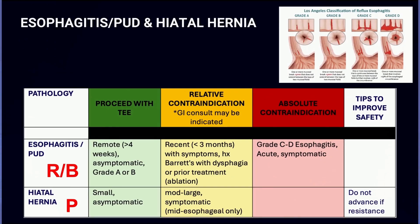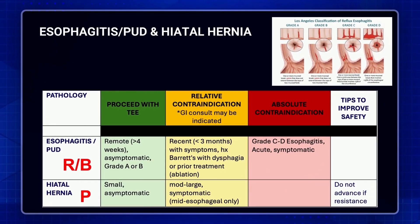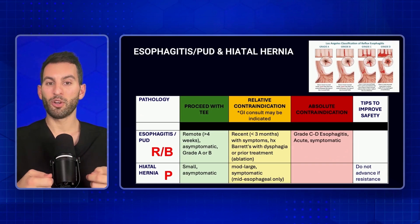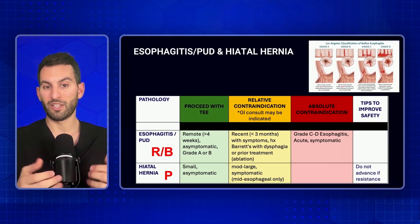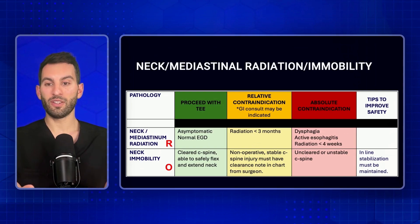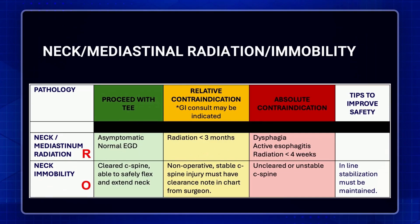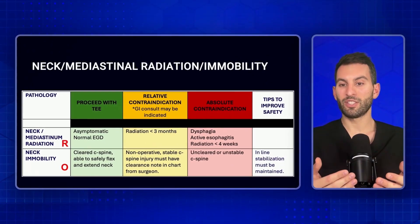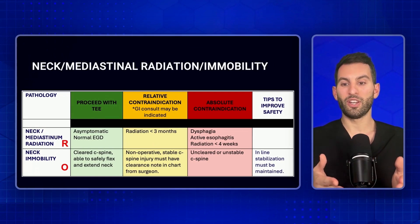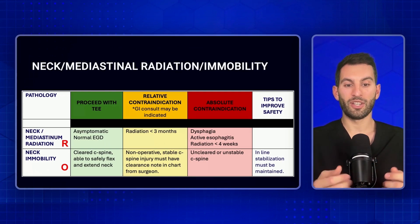When thinking about esophagitis or peptic ulcer disease, determine the severity — tissue is weaker when severely inflamed and is a higher bleeding risk. Was it recent or a long time ago? What's the grade of the esophagitis? With hiatal hernias, advancement of the TEE probe can be difficult, so don't push too hard. For neck or mediastinal radiation, ask how recent it was and whether the patient has active symptoms like dysphagia. With cervical spine problems, neck manipulation is common during probe placement, so it's important to know whether the cervical spine has been cleared or is unstable, as you could put the patient at significant risk of neurologic injury.